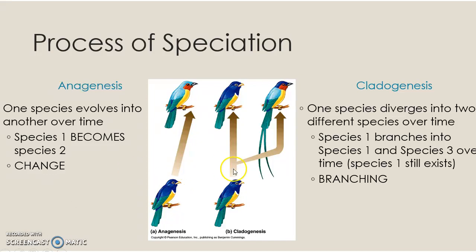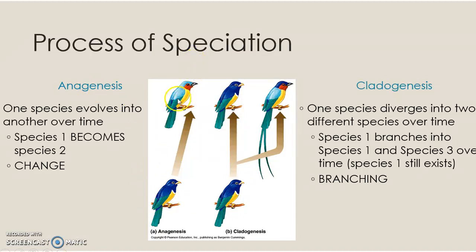Down here at the bottom of this image, we have the original species — the common ancestor, or whatever this was a million years ago. So through the process of anagenesis, this original species evolves into this new species. Species one becomes, or evolves into, species two, and this is over the course of countless generations.